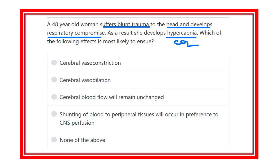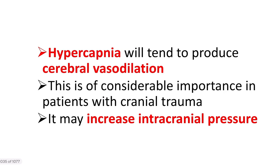And none of the above. We need to find out the clinical effect caused by hypercapnia — that means increased carbon dioxide level. The patient suffered blunt trauma to the head, developed respiratory compromise, and the blood carbon dioxide level increased. So what will be the effect of carbon dioxide on the blood vessels?